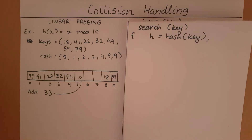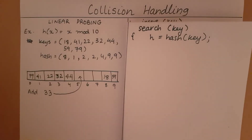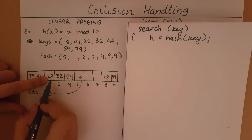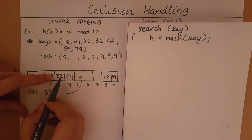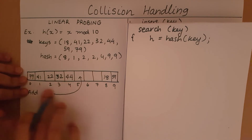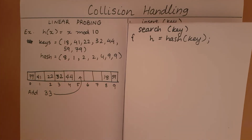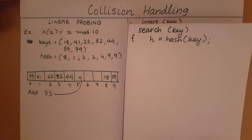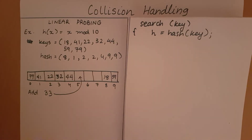What if we search for something that doesn't exist? Suppose I search for 42. 42 mod 10 = 2. I search at index 2 — 22 is not 42. Next index: 32 is not 42. Next index: the next slot is empty. At this point, if I reach an empty index without finding my key, I can say that element is not in this bucket array. Another termination case is when the bucket array is full and I've traversed all N elements without finding the key.